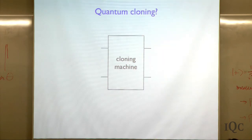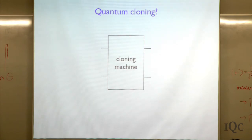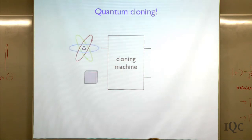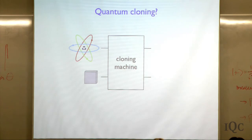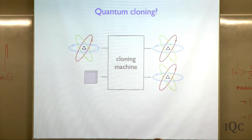Now the question is: what happens in the quantum world when we try to clone things? We want to imagine that we have a cloning machine which can take as input some quantum state and produce as output two copies of that quantum state. So maybe we have an atom and it's in some quantum state — this is some cartoon picture. We have some atom depicted here, and then we have some other register that we put in some standard state. What we would like is that the output of this cloning machine is two copies of this quantum state, exactly the same as this one.